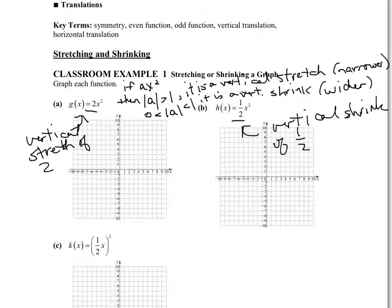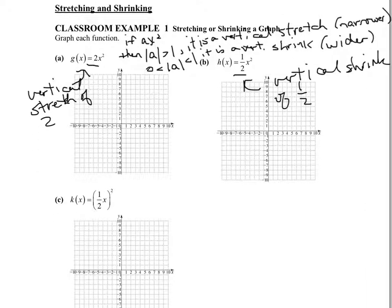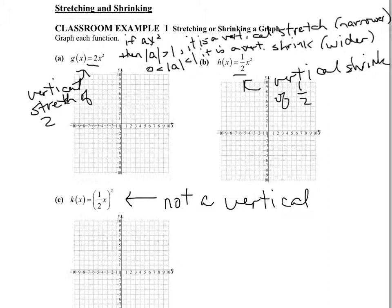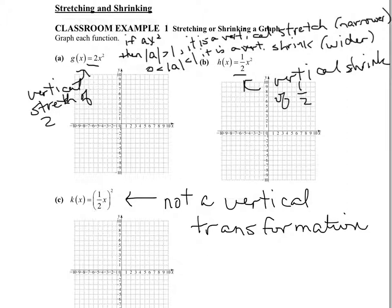Notice that example c is different because we don't have the one-half just in front of the x squared. The one-half is just in front of the x, and then the entire thing is being squared. When that happens, that is not a vertical transformation — it's actually a horizontal one. If the coefficient is applied only to the x before anything else happens to it in the function, then it's a horizontal transformation. We are not going to cover horizontal stretches and shrinks in this course.